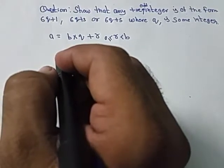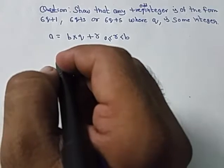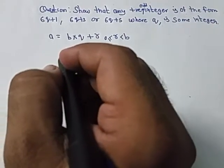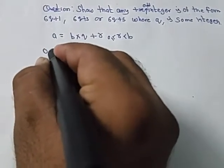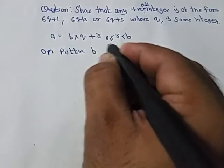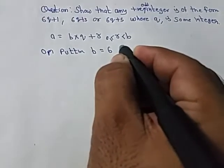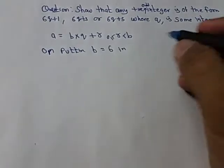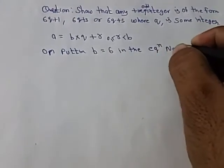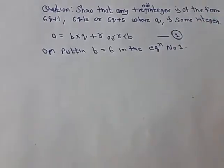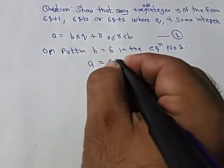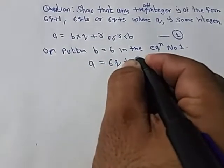Show that any positive odd integer is of the form 6q plus 1, 6q plus 3, or 6q plus 5, where q is some integer. In this case, putting b equal to 6 in equation number one.